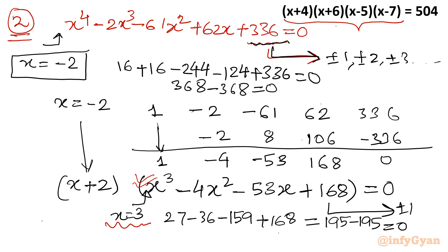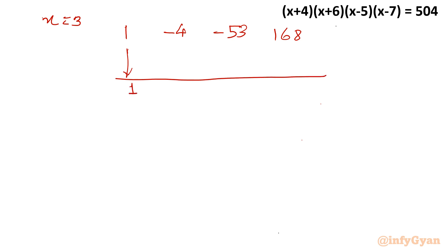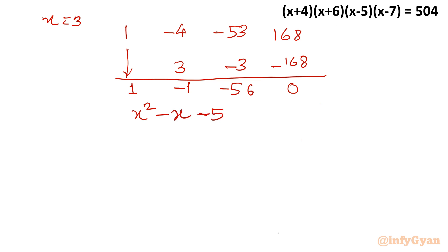Applying synthetic division again for x = 3, with cubic coefficients 1, -3, -15, 168: the process gives a remainder of 0. The cubic reduces to the quadratic factor x²-x-56 = 0. So far we have factors (x+2)(x-3) and this remaining quadratic.